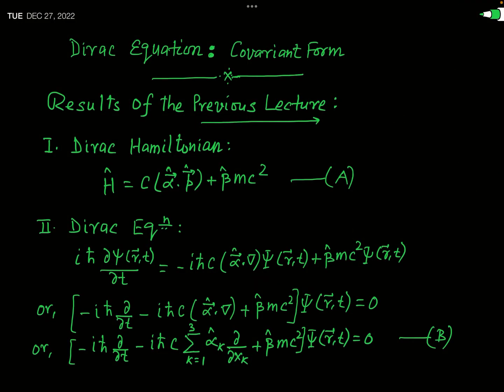In the previous lecture we started dealing with the famous relativistic Dirac equation. The difficulties of the Klein-Gordon equation were overcome by Dirac by introducing a Hamiltonian which is linearly dependent on the momentum. In the Klein-Gordon equation the Hamiltonian or energy could have both positive and negative values, which introduced a very important difficulty in finding the probability density. To rectify that problem, Dirac introduced a Hamiltonian linearly dependent upon the momentum.